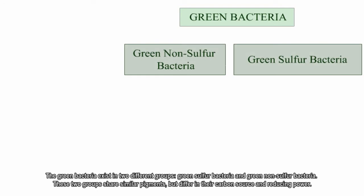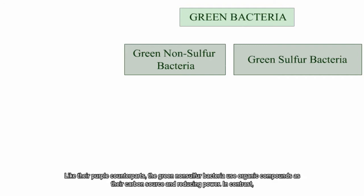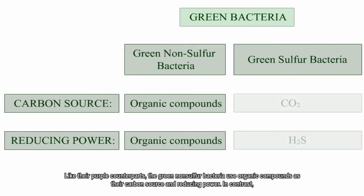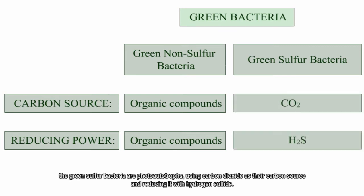The green bacteria also exist in two different groups: green sulfur bacteria and green non-sulfur bacteria. These two groups share similar pigments but differ in their carbon source and reducing power. Like their purple counterparts, the green non-sulfur bacteria use organic compounds as their carbon source and reducing power. In contrast, the green sulfur bacteria are photoautotrophs, using carbon dioxide as their carbon source and reducing it with hydrogen sulfide.